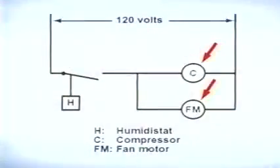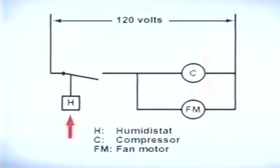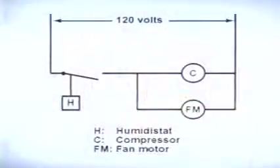A dehumidifier is a piece of equipment designed to remove humidity from an area. A dehumidifier is made up of three components: the compressor, the fan motor, and the humidistat. From the schematic diagram, we can see that the compressor and the fan motor are wired in parallel with each other, and both are in series with the humidistat. The humidistat will close its contacts on a rise in humidity. When the humidity level drops below the set point, the contacts on the humidistat will open, de-energizing the compressor and the fan motor.